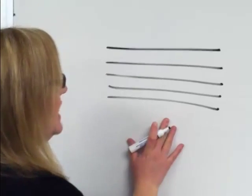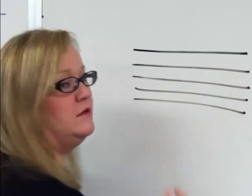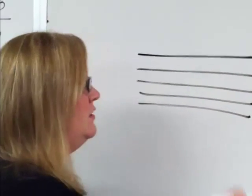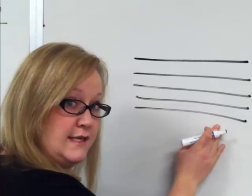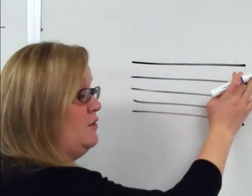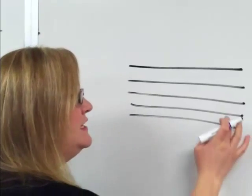So we have the staff and these lines all mean a different note. If there is a note written on the lower line, it will sound lower than a note written on the higher line. Also, these spaces count as a note too.